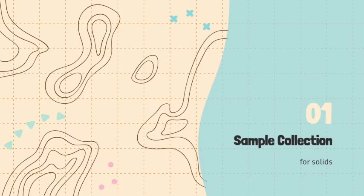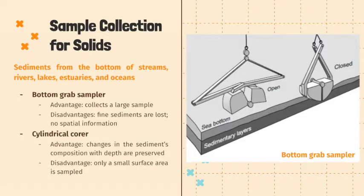As discussed in Module 3, there are three steps in the sampling plan. The first step is sample collection, and the instrument or method used for each type of solid is different. For instance, sediments from the bottom of bodies of water are collected with a bottom grab sampler or with a corer. The first picture shows an illustration of a bottom grab sampler, which contains a jaw that opens then closes to scoop the sediments. An advantage of using this instrument is that a large amount of sample can easily be obtained.